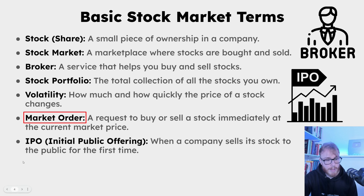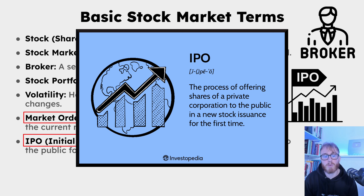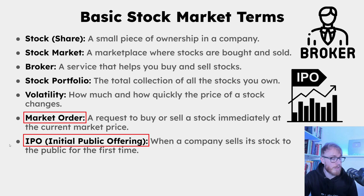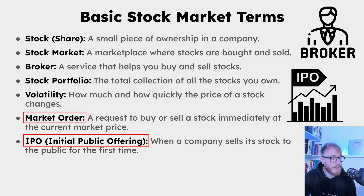The next term is IPO, which stands for Initial Public Offering. This is when a company sells its stock to the public for the very first time. If you wonder how a stock appears in the stock market — in order to appear, the company needs to sell its stocks for the first time, and that is called an IPO.